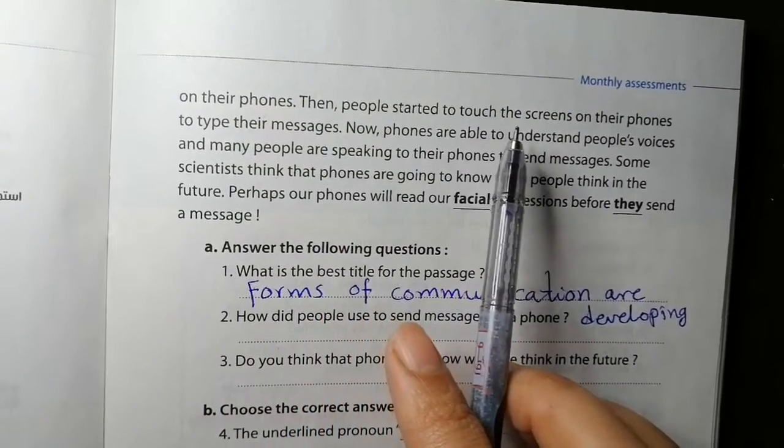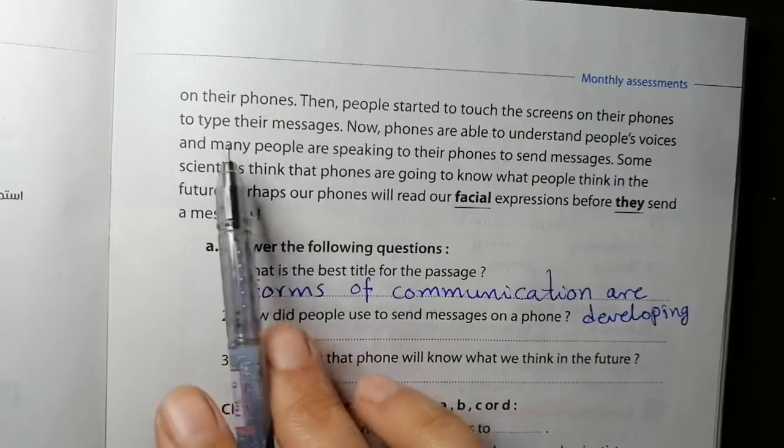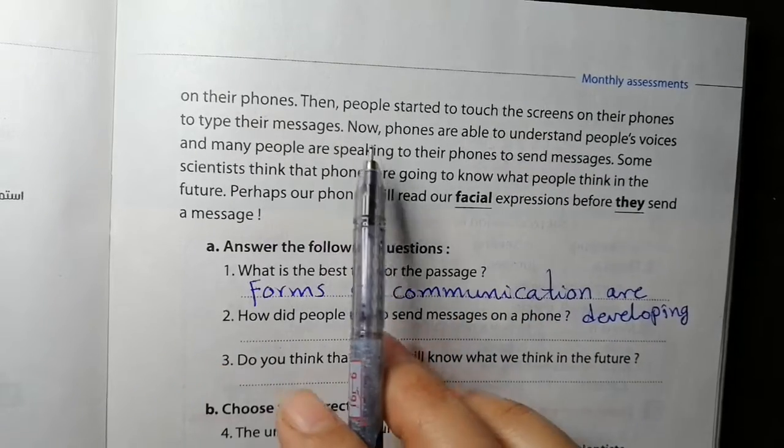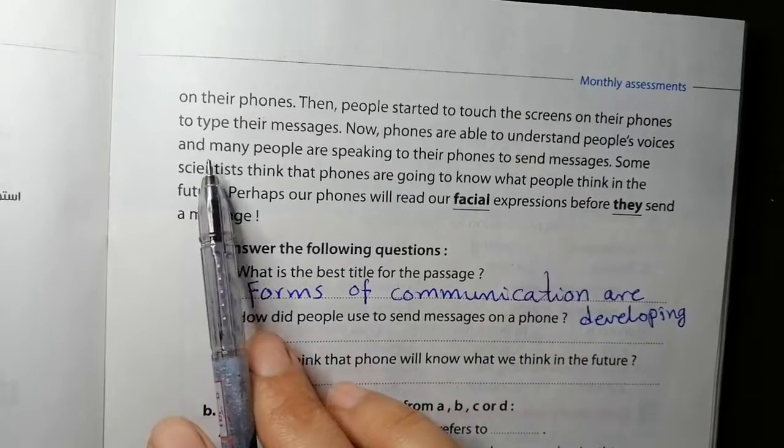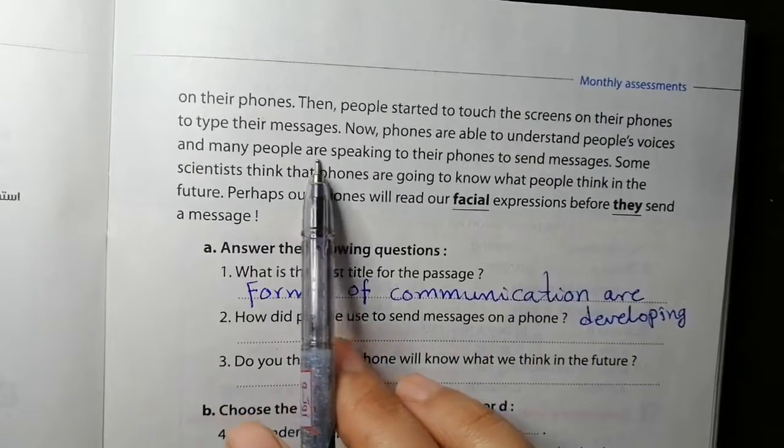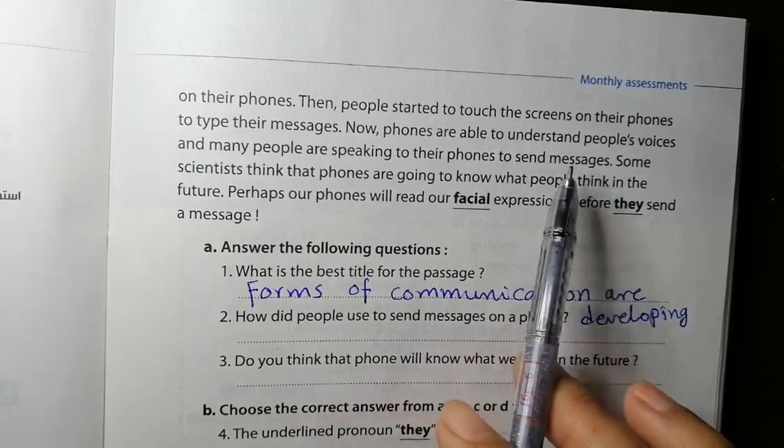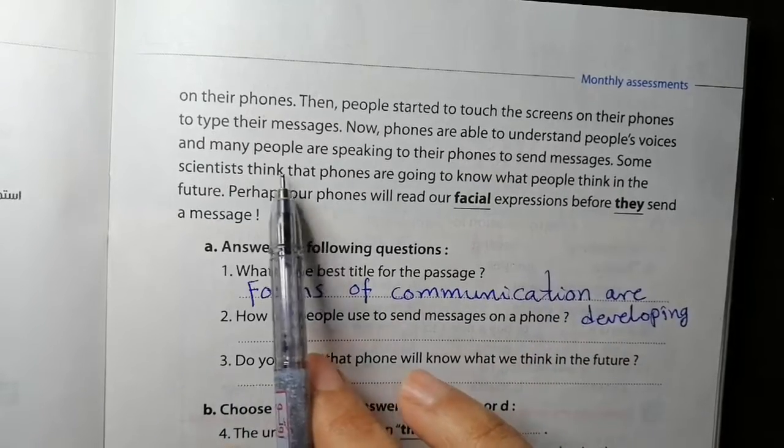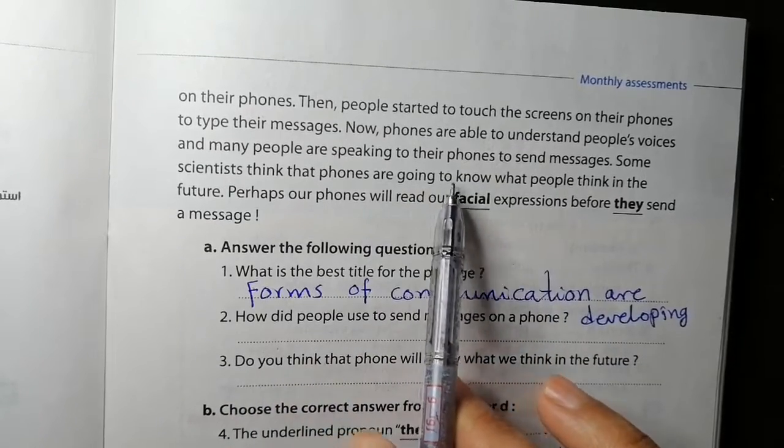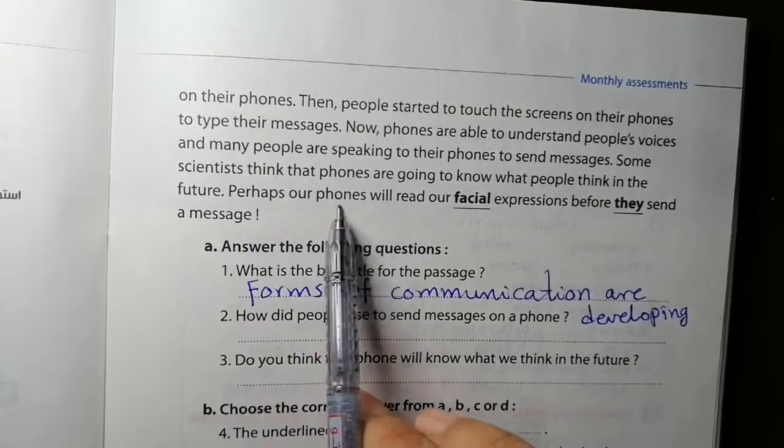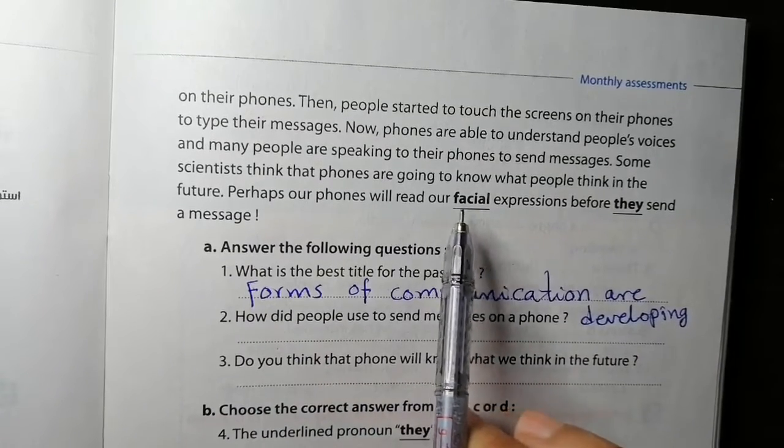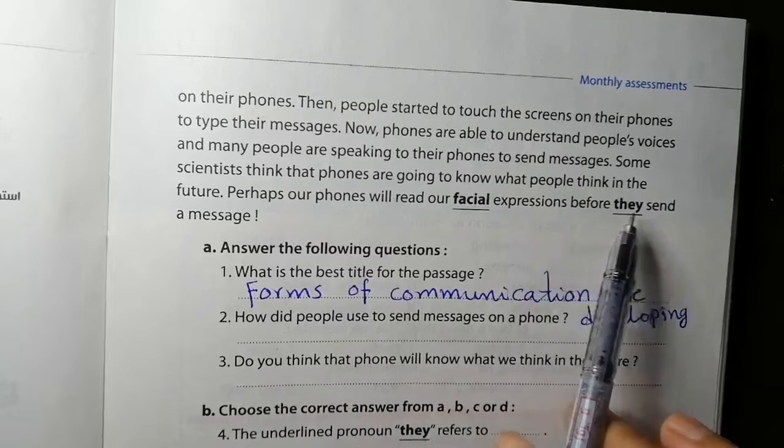Then people started to touch the screens on their phones to type their messages. Now phones are able to understand people's voices, and many people are speaking to their phones to send messages. Some scientists think that phones are going to know what people think in the future. Perhaps our phones will read our facial expressions before they send a message.